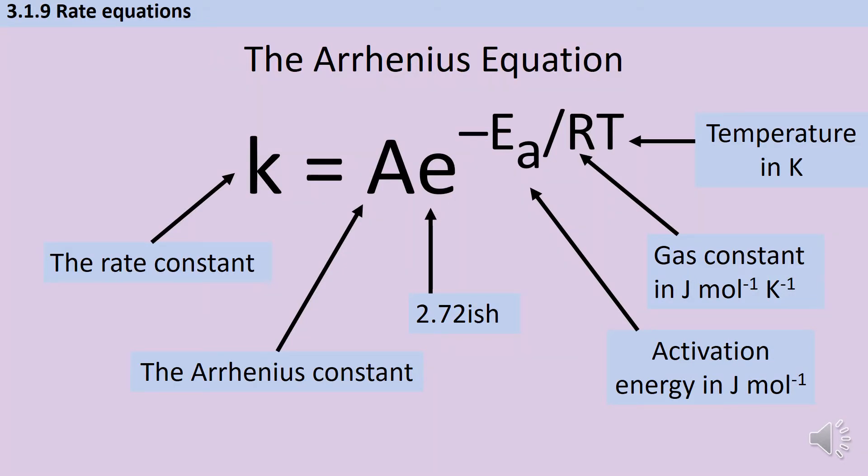In the fourth video in this series we met the Arrhenius equation, and if you haven't already watched that video I would recommend you do so before you try and handle this topic. The Arrhenius equation is a numerical representation of how the rate of a chemical reaction is impacted by a number of factors, including the activation energy and also the temperature.